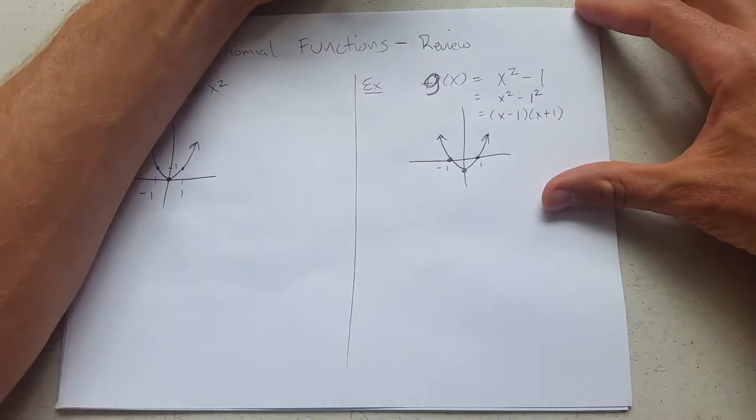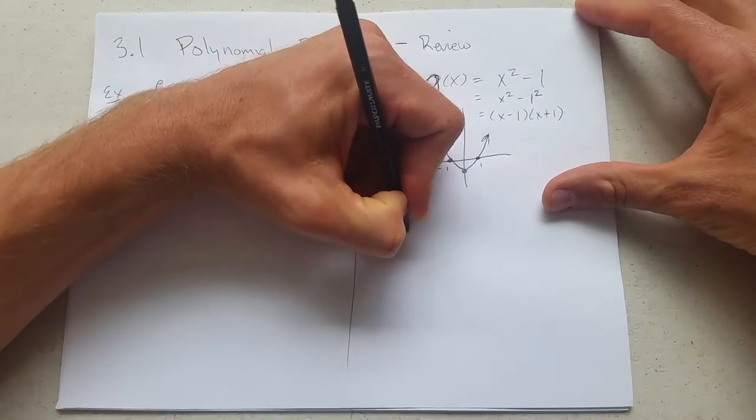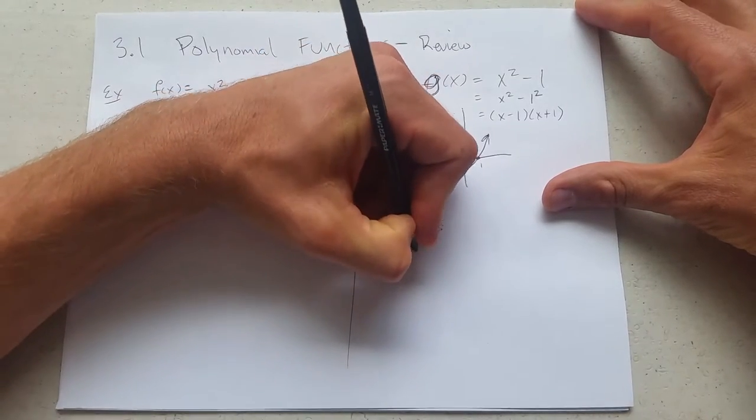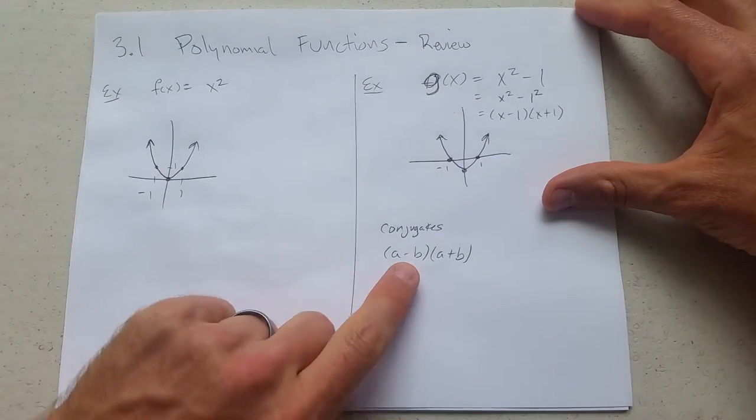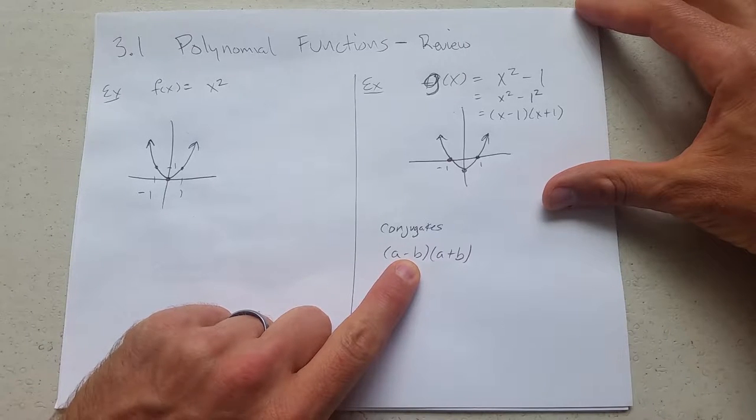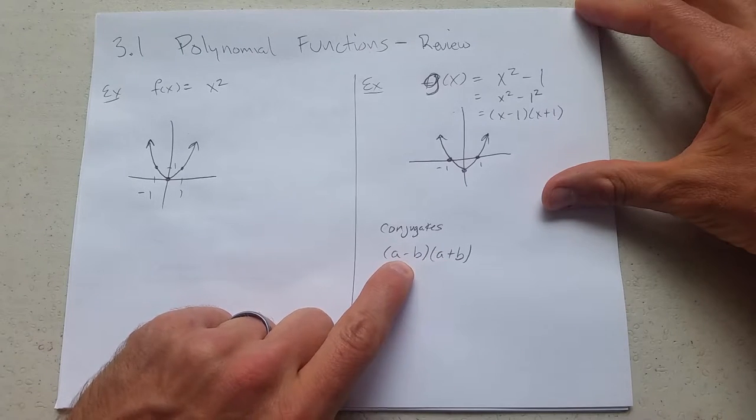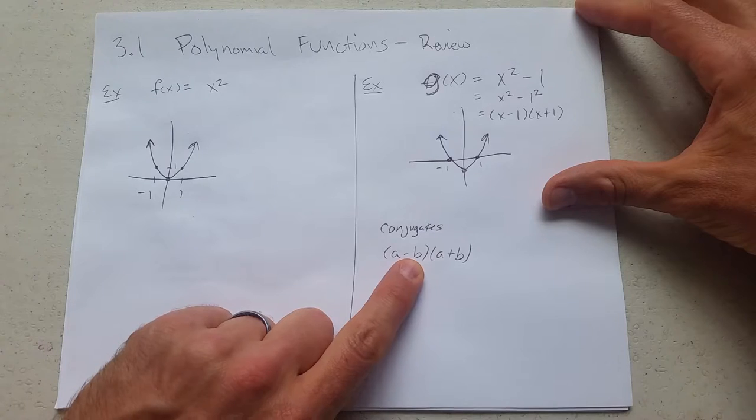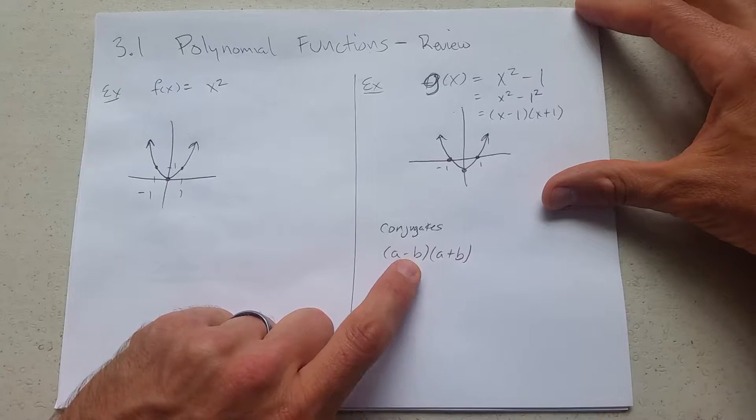These right here are called conjugates. What are conjugates? Conjugates are special types of products. They're the same, except instead of plus, you use minus. So the conjugate of a minus b is a plus b. The conjugate of a plus b is a minus b. You basically just change the sign of the second term inside.